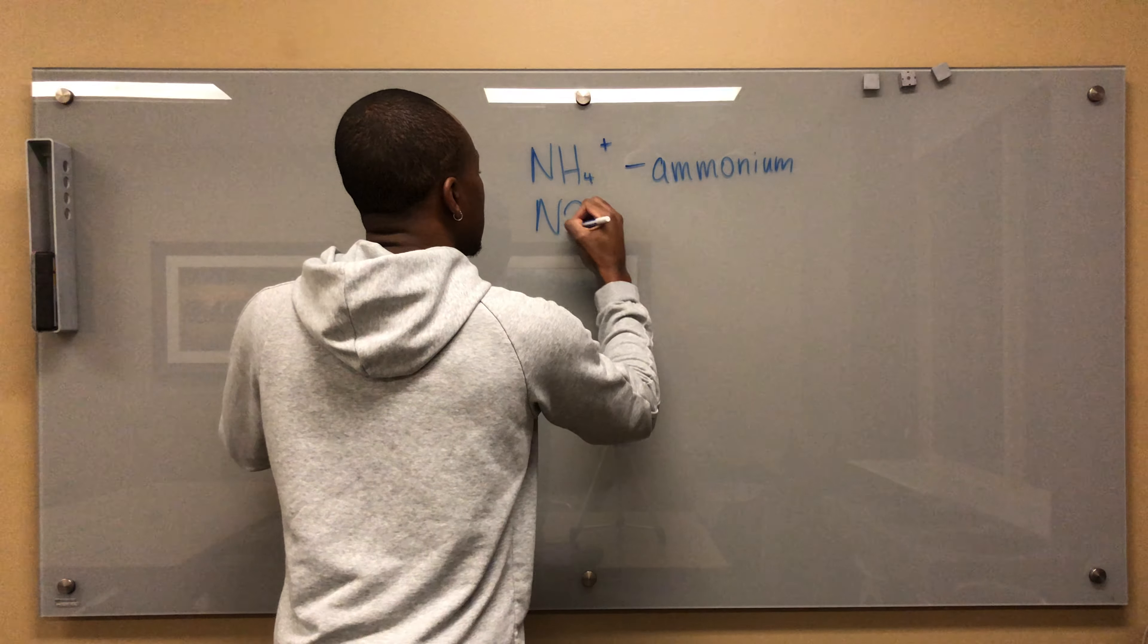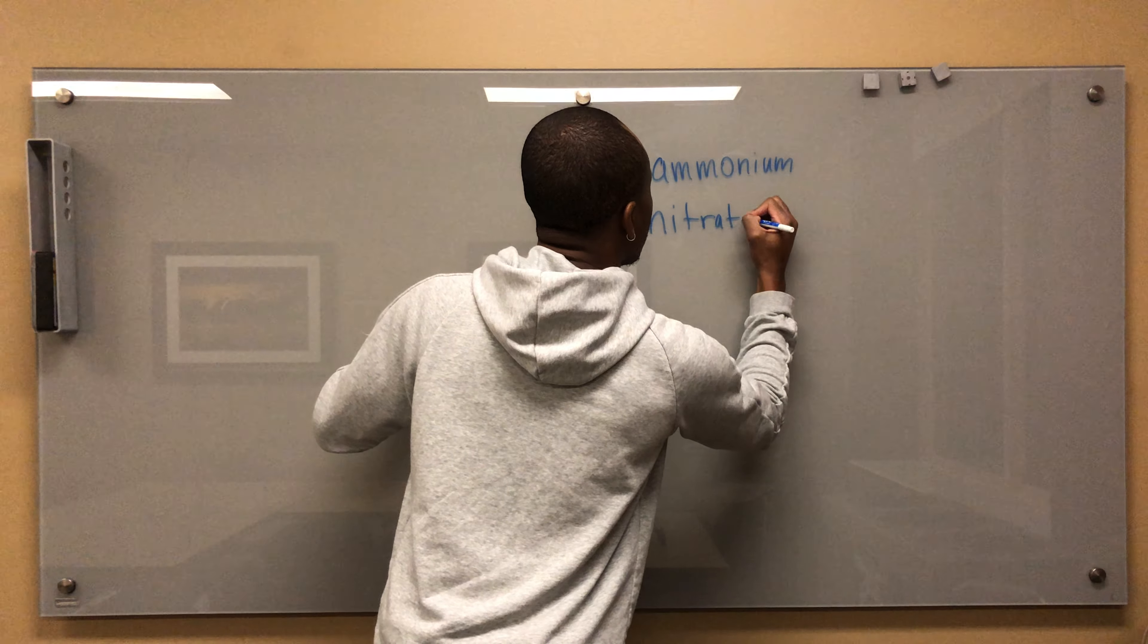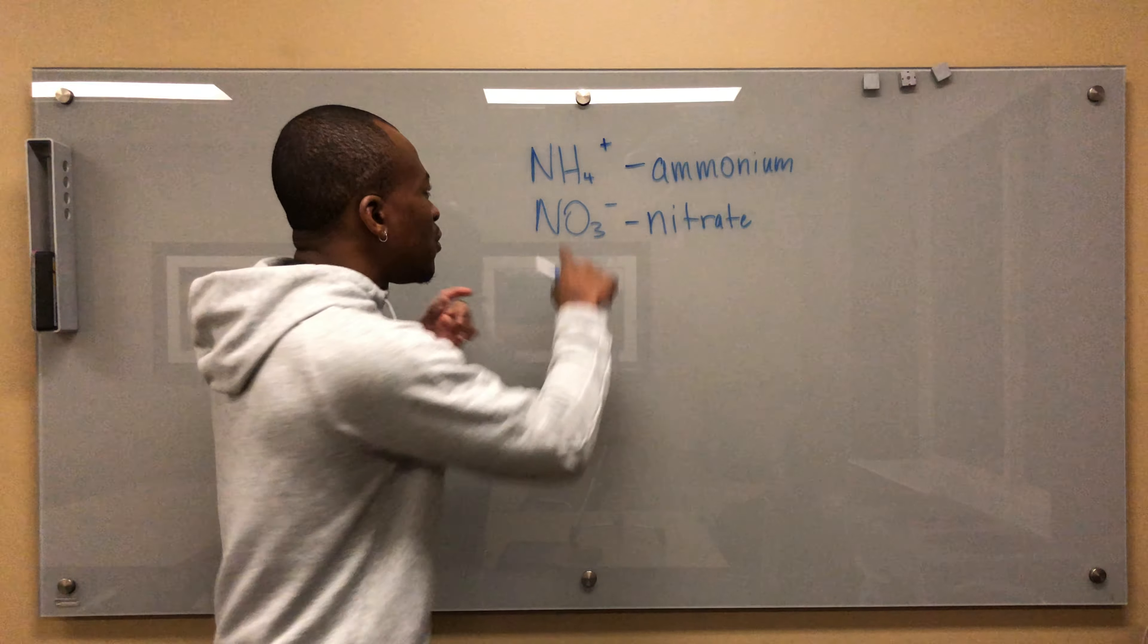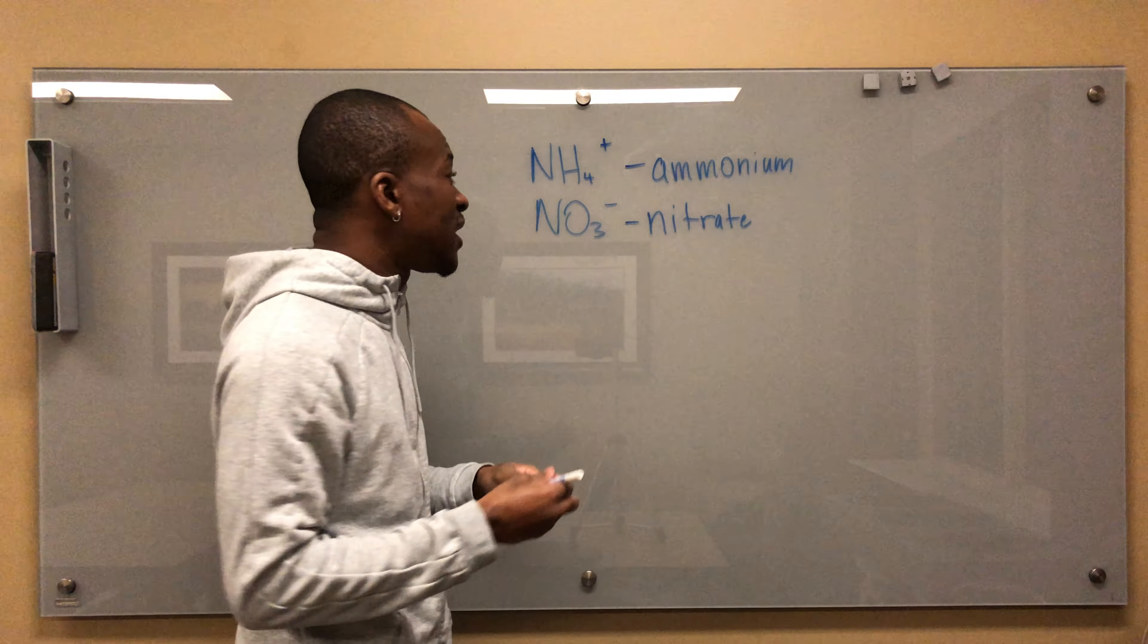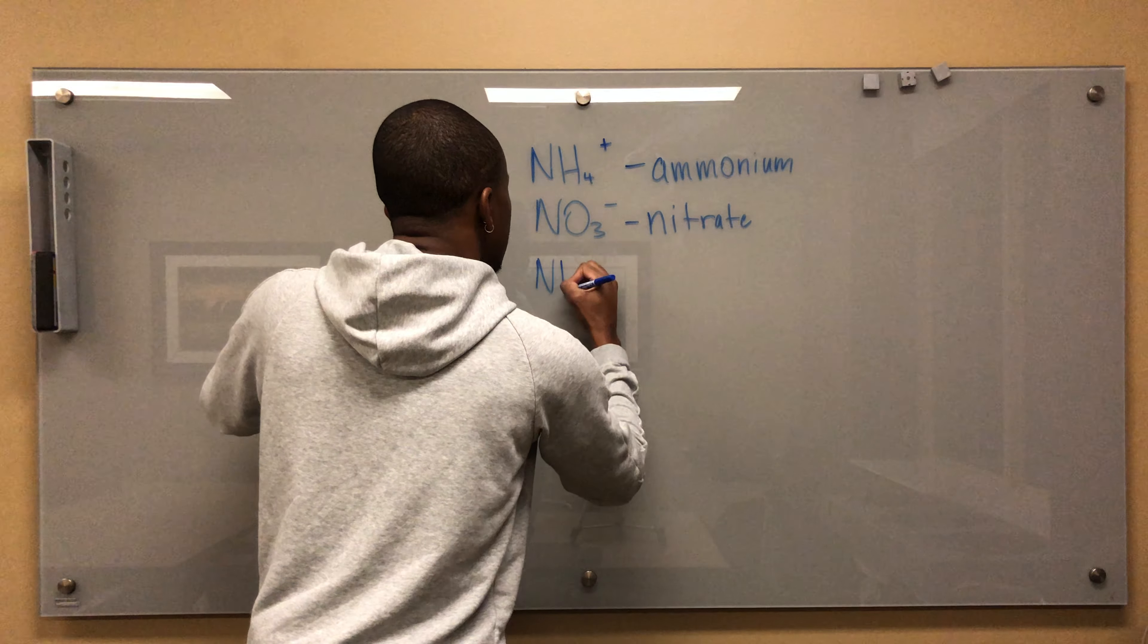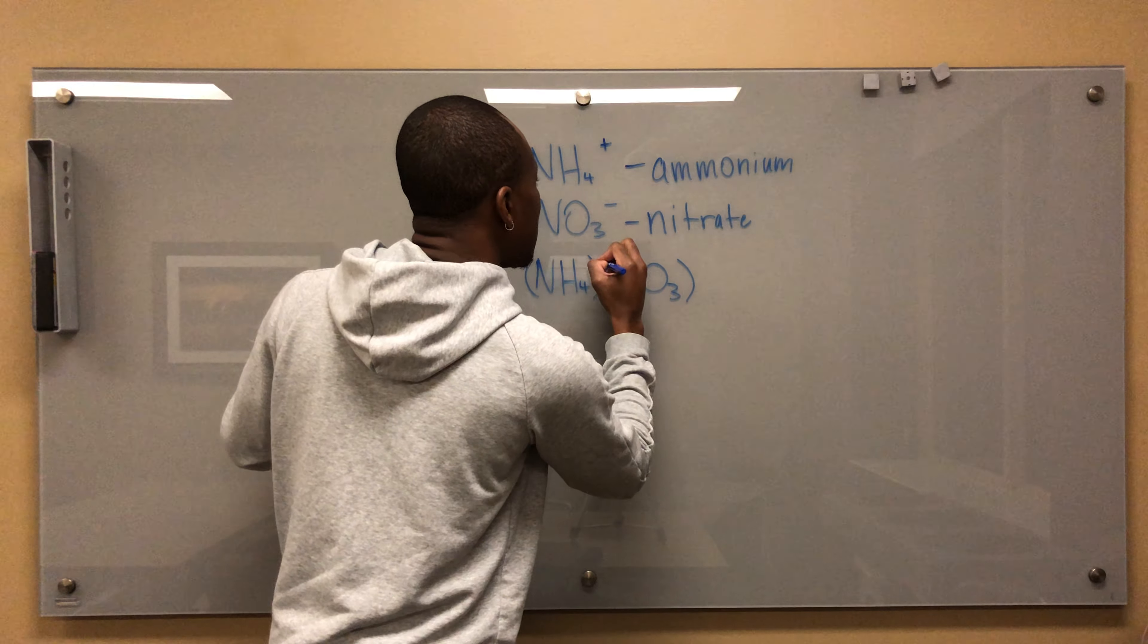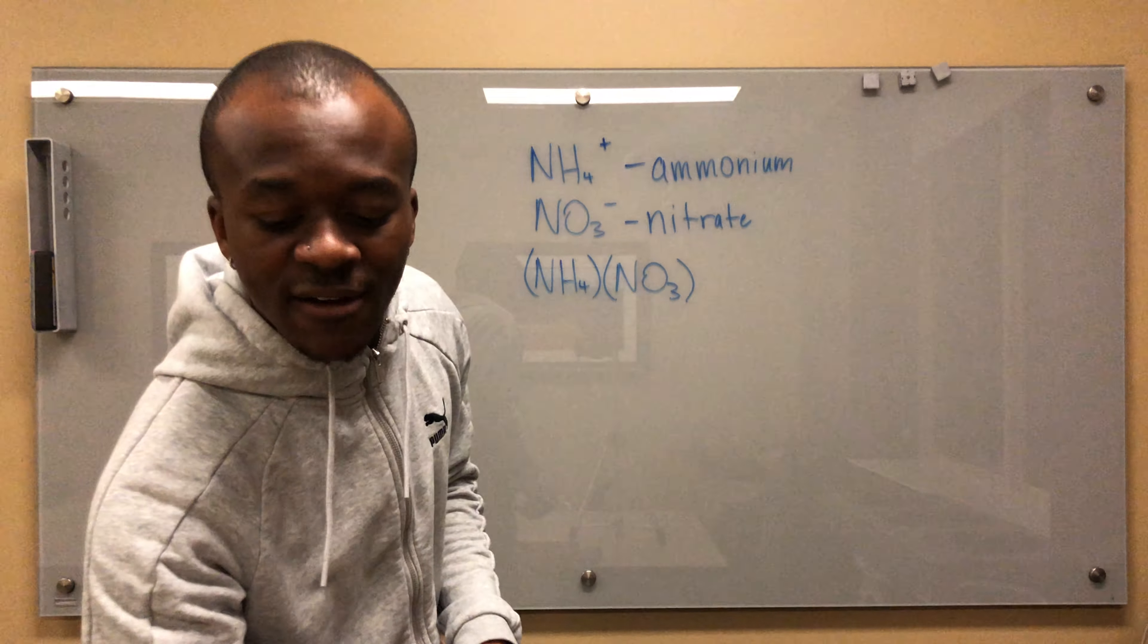Nitrate is NO3-. I'm a little rusty on chemical nomenclature - how these things get their names and how you might predict what this will be - but I just know this one. This is nitrate, this is ammonium. When you combine them together, how do you balance them out? This is a plus, this is a minus, so you put parentheses around it. So that's ammonium nitrate: NH4NO3. The plus charge is balanced out with the minus. Now it's asking for the mass percentage.